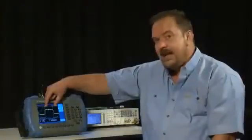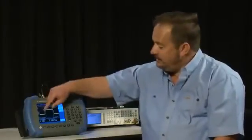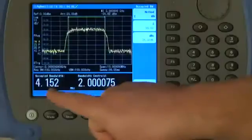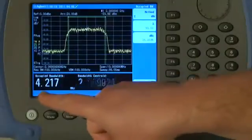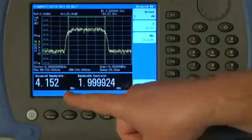What is happening here is the analyzer is automatically measuring within what bandwidth 99% of the power on the display is contained. That is varying slightly because of the noise on the signal, but you can see that the occupied bandwidth is about 4.1, maybe 4.2 MHz.